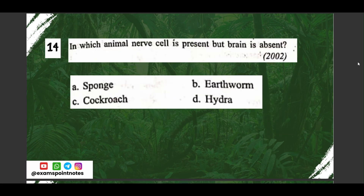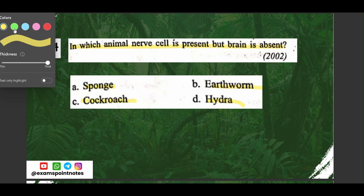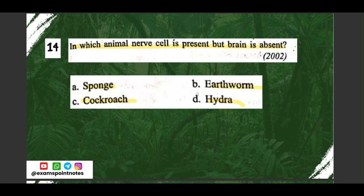Question number fourteen: in which animal are nerve cells present but the brain is absent? Options are: A) sponge, B) earthworm, C) cockroach, D) Hydra. The correct answer is option D, Hydra.